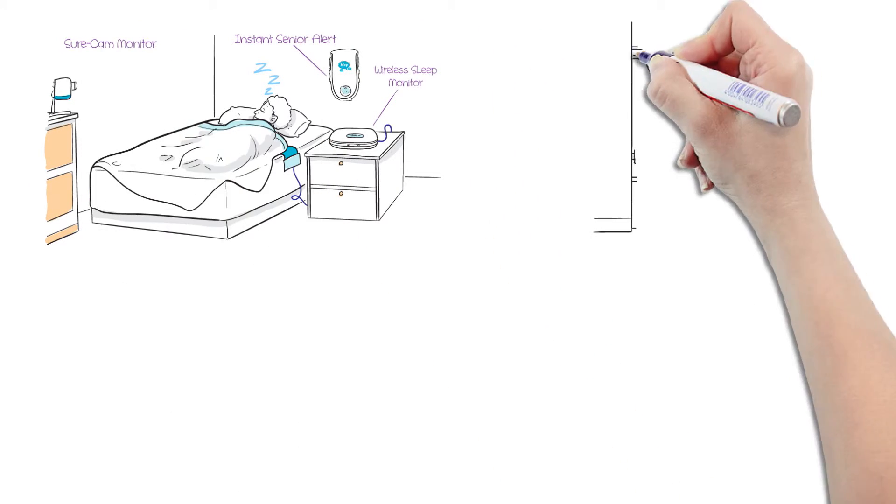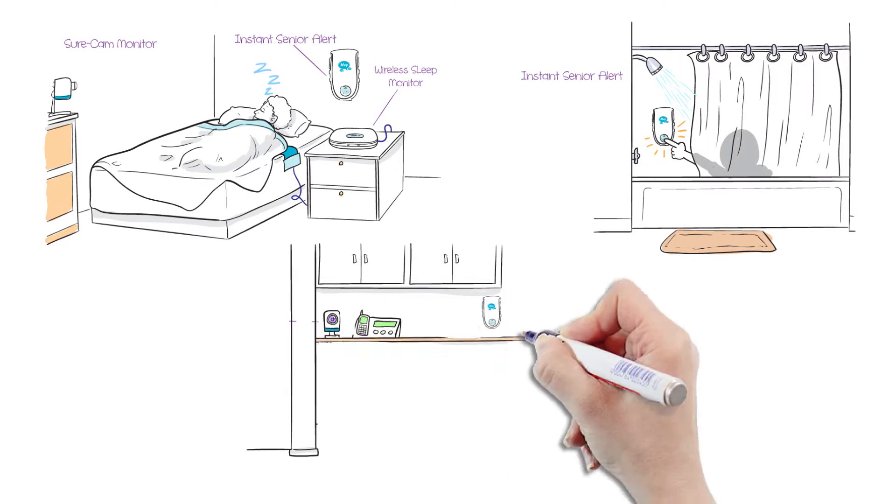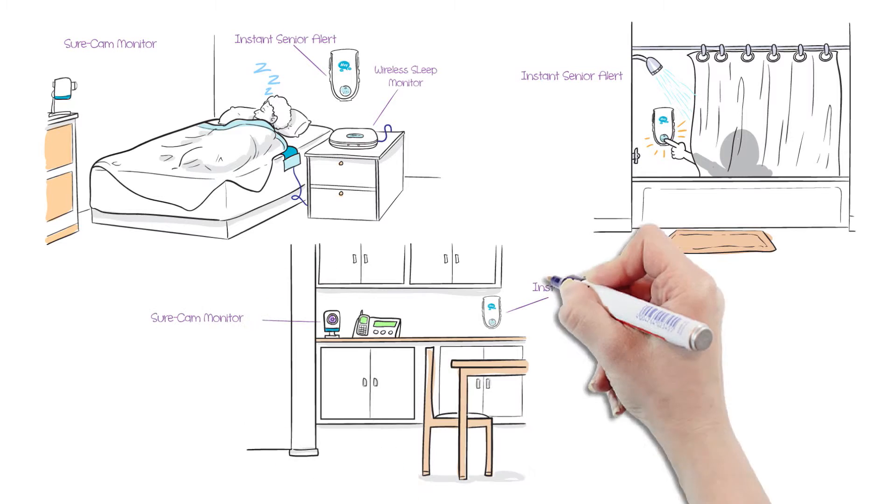All you have to do is find the perfect spots for the wireless bed monitor, alert buttons, and two-way radio and video communicators, and you'll easily be ready to monitor your loved one right on your smartphone.